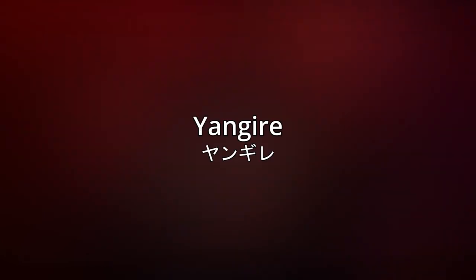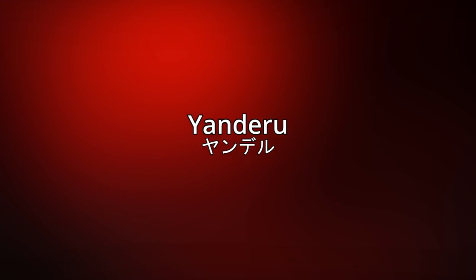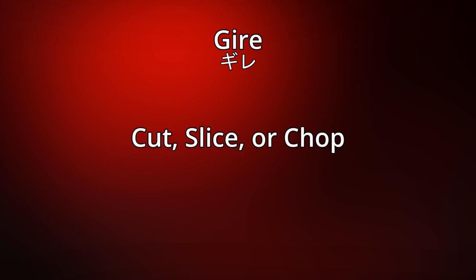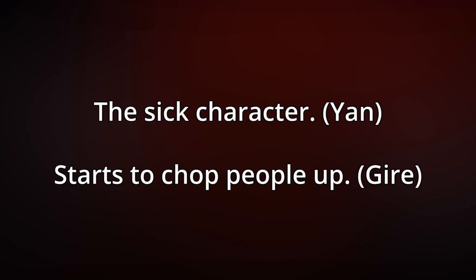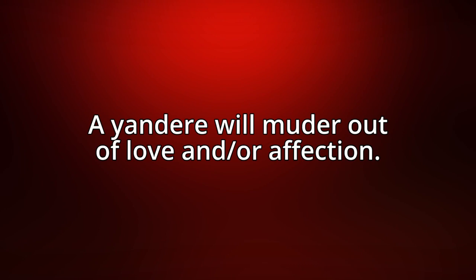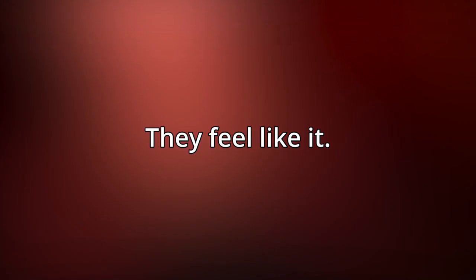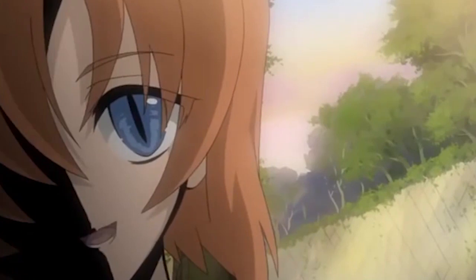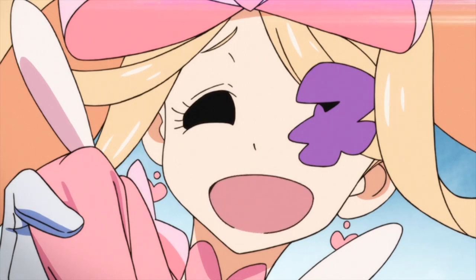Yandere characters shouldn't be confused with Yangire characters, which are similar to Yandere. Yan still comes from yanderu, but is blended together with gire, which can mean cut, slice, or chop — in other words, the sick character starts to chop people up. Both Yandere and Yangire have a seemingly friendly facade, but while a Yandere will murder out of love and or affection, a Yangire character's motivation for killing is, well, they just feel like it, and the characters usually go pretty far off their rocker. Examples include Rena from When They Cry, Sayu Ogawa from Akame ga Kill, and Nui Harime from Kill la Kill.